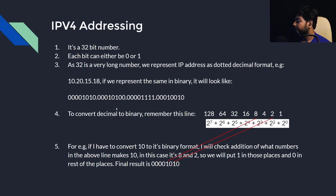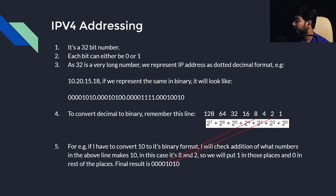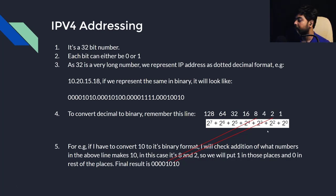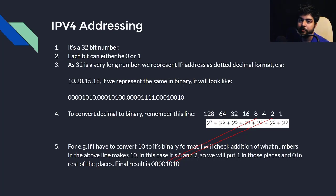Suppose you are given a binary number and asked to convert it to decimal form. Write down the binary number and also write down the powers of 2 from right to left. Then only add those powers of 2 under which there is a 1. If you add those values, you will get the decimal number — it's that easy.